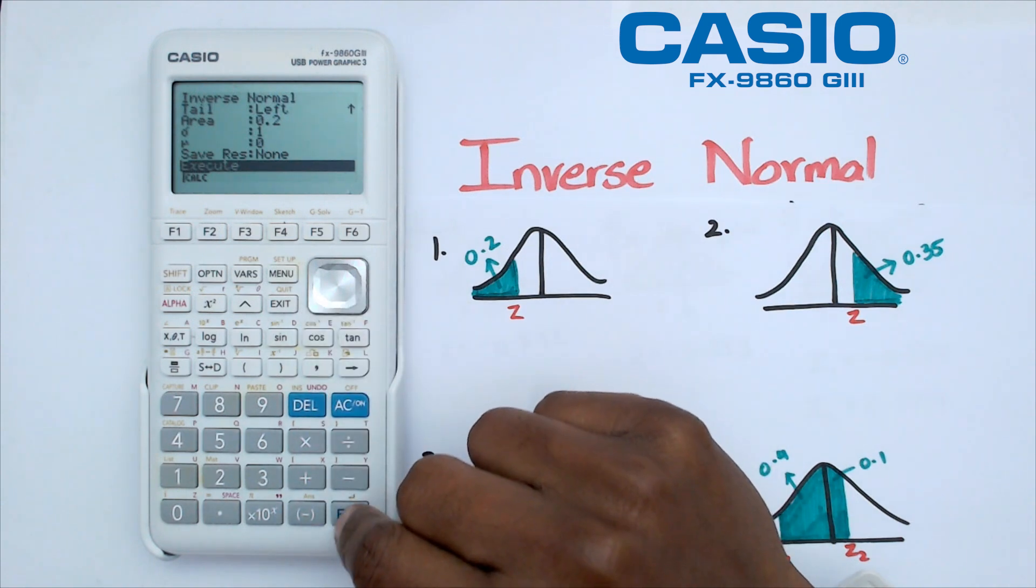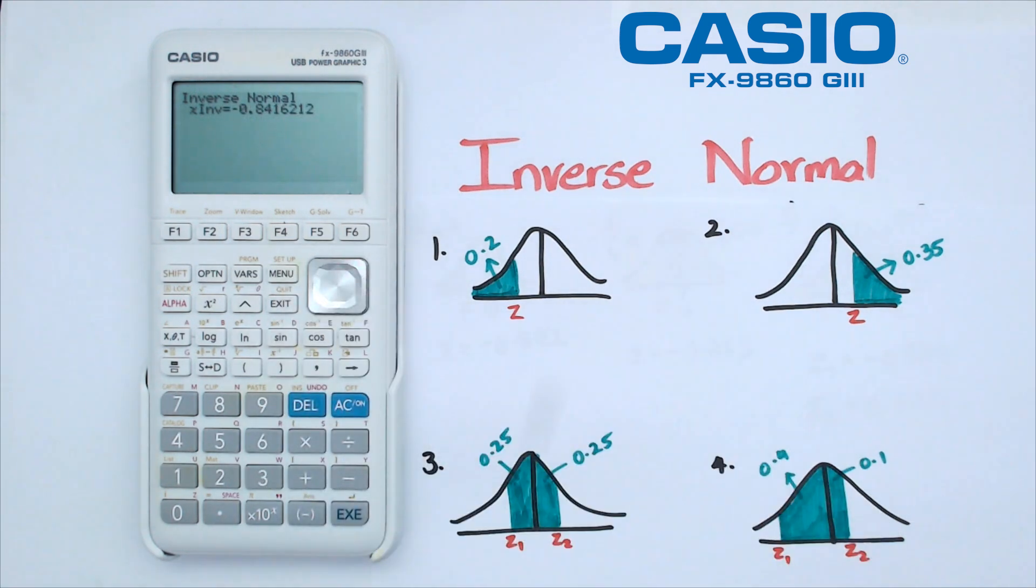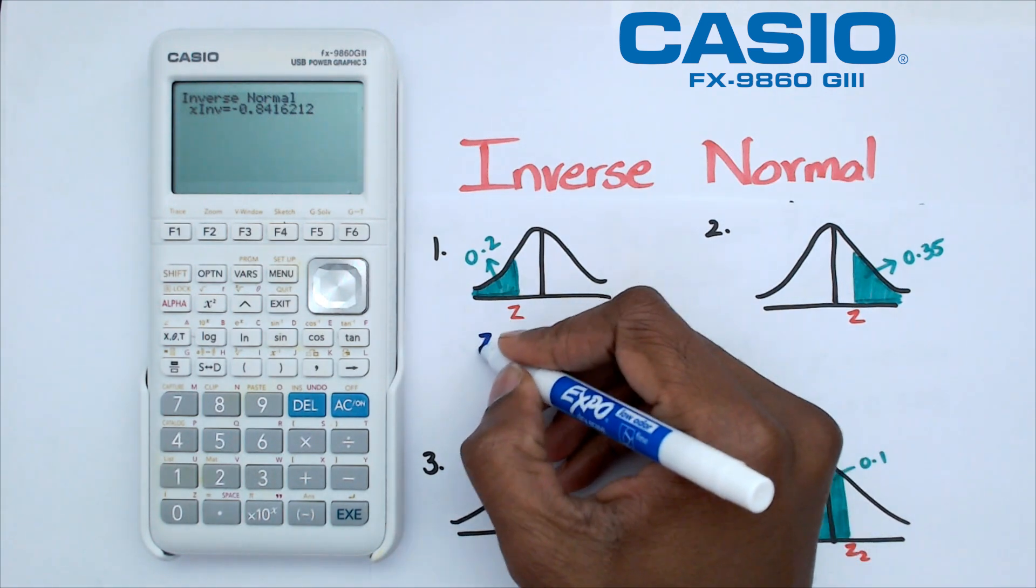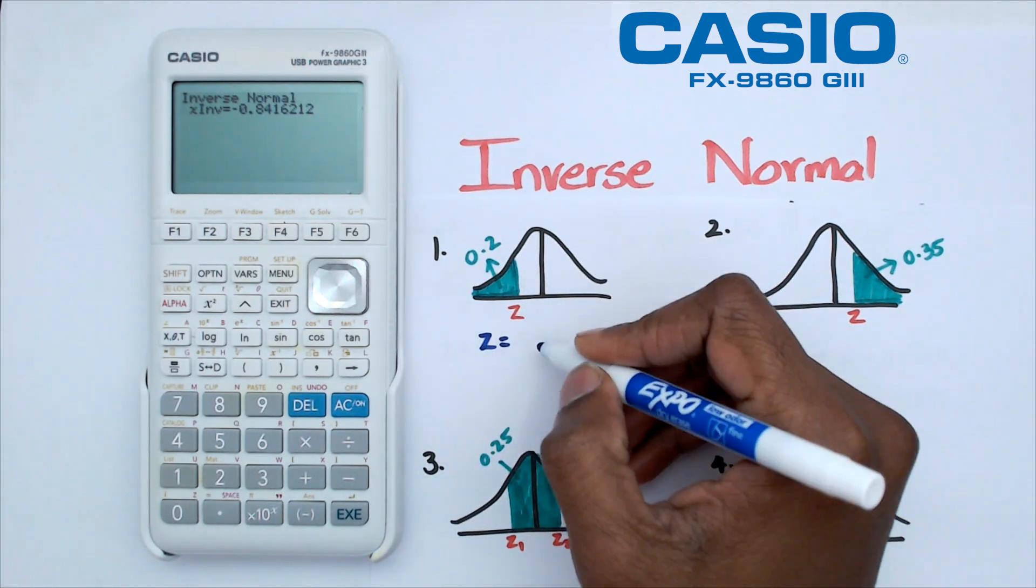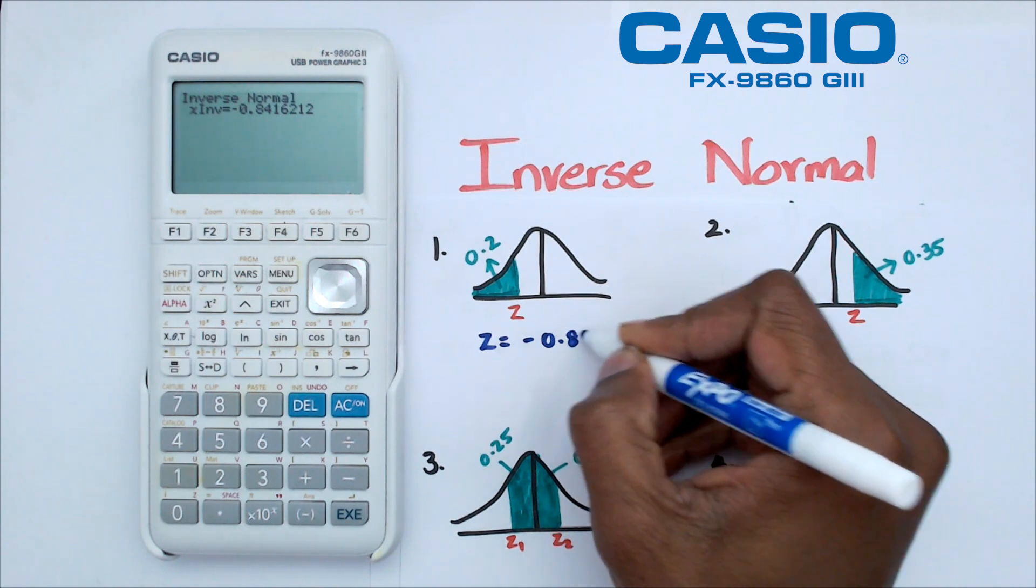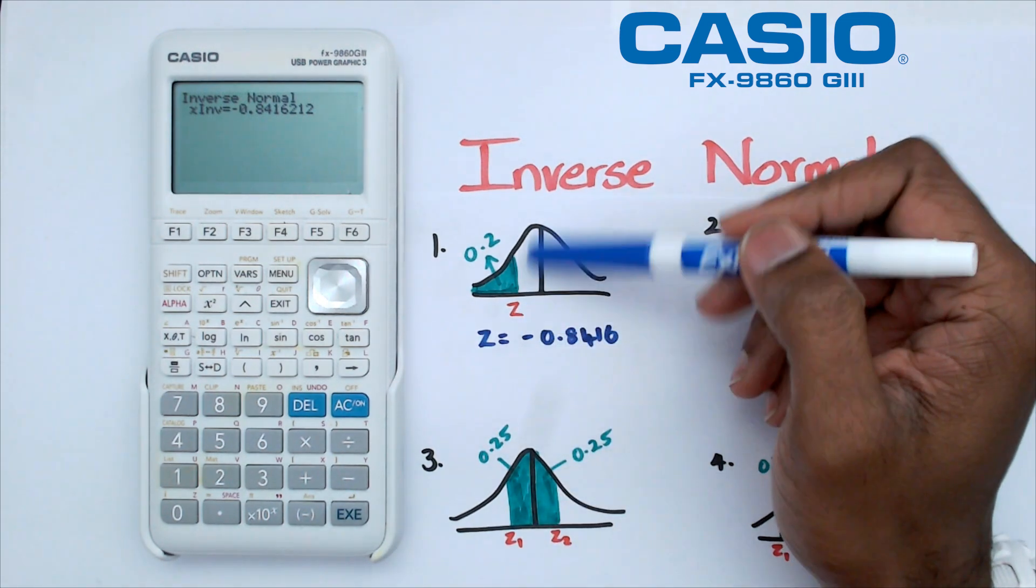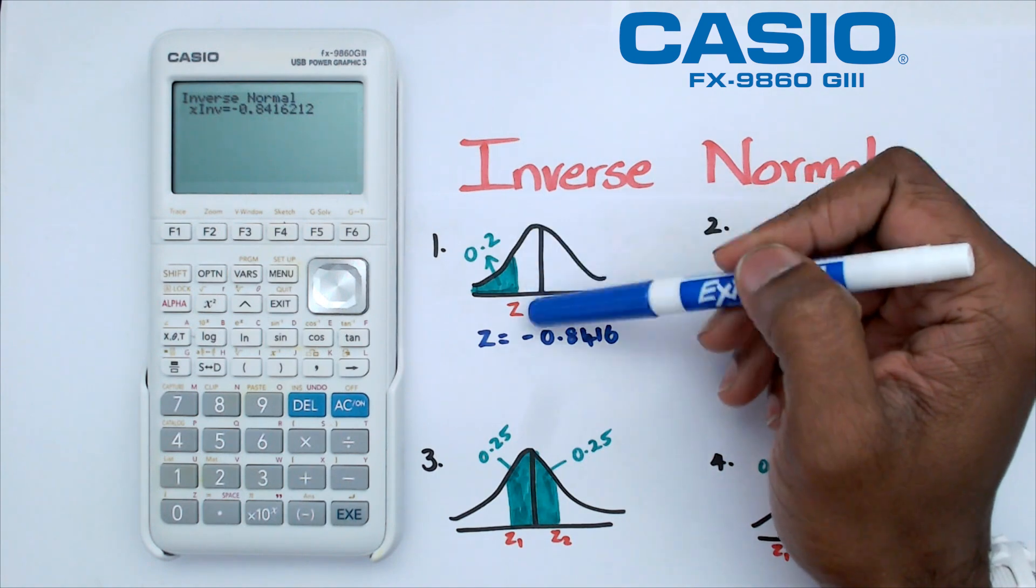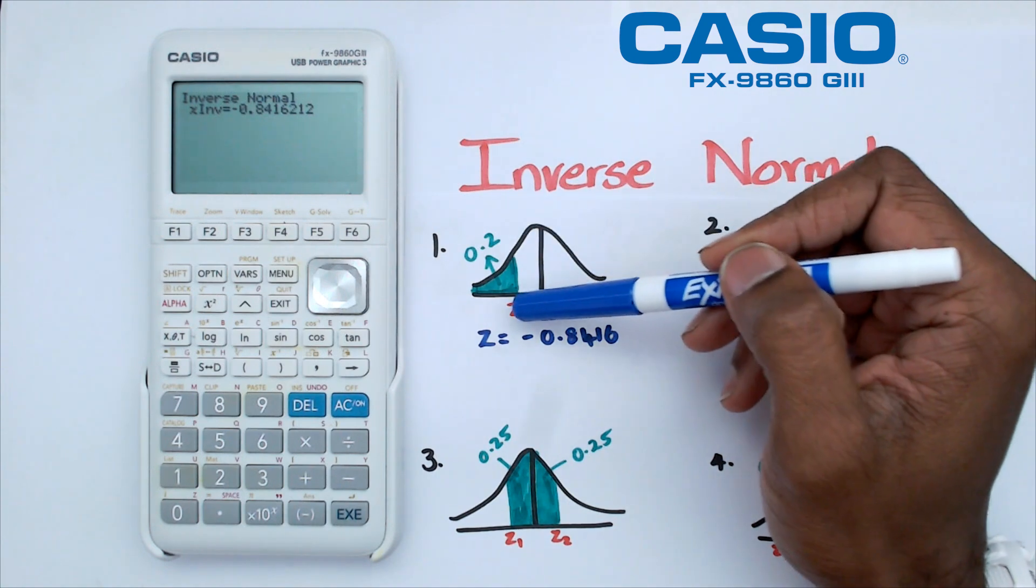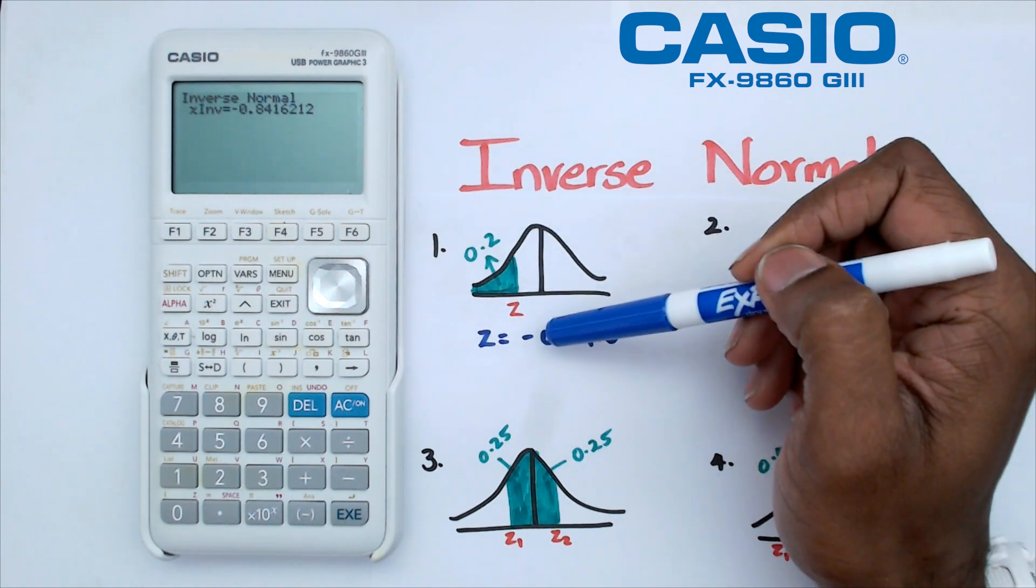If we go down, we should be able to hit calculate, and that's going to give us a z value. For question 1, the z value is negative 0.8416. We know that's correct because 0 is right in the middle there, and so the z value has to be a negative value.